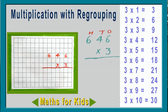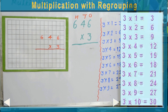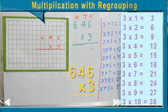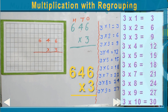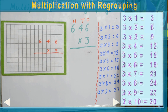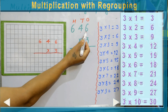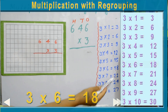Hello friends, today we are going to learn multiplication with regrouping. Look at this example: 646 times 3. 646 is a three-digit number, so when you multiply, we have to start from the ones place — we multiply the ones number first. So here we have 6 in the ones place, so 3 times 6 is 18.